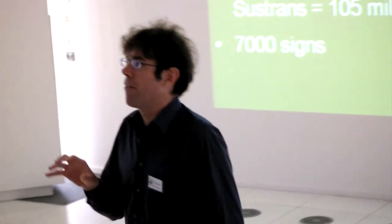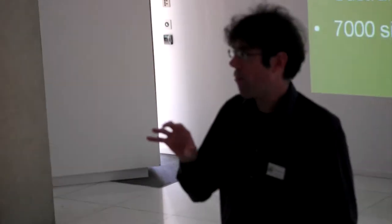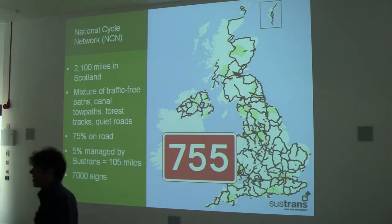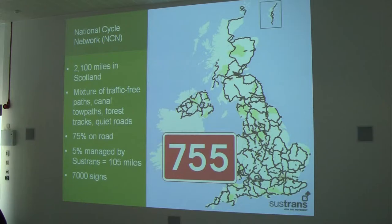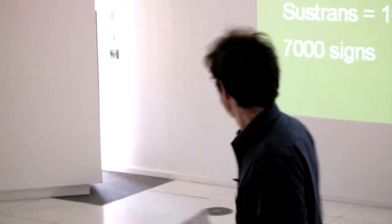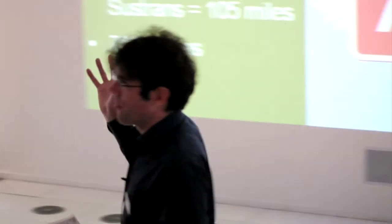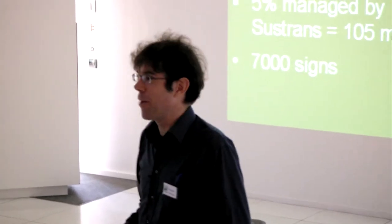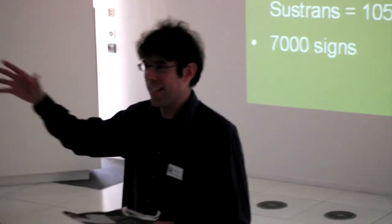A lot of people have heard of Sustrans because of the National Cycle Network. Many of you may recognise the red number which appears on signposts as an indication of the National Cycle Network — it's even written into formal documentation and you're legally allowed to put it on signposts, which is quite something. There are some formal statistics: 2,100 miles of National Cycle Network in Scotland, though that number keeps increasing.